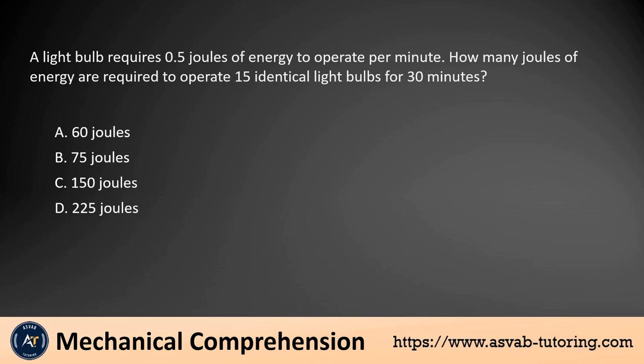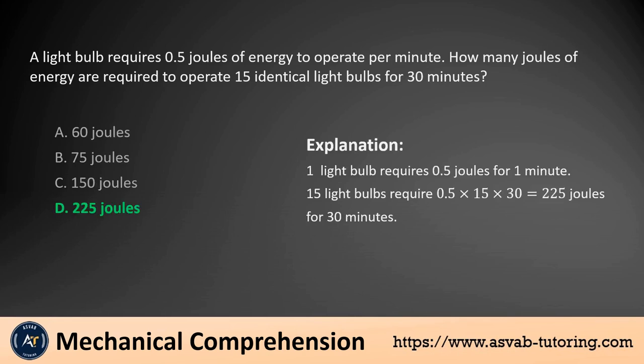A light bulb requires 0.5 joules of energy to operate per minute. How many joules of energy are required to operate 15 identical light bulbs for 30 minutes? A. 60 joules. B. 75 joules. C. 150 joules. D. 225 joules. The answer is D. One light bulb requires 0.5 joules for 1 minute. 15 light bulbs require 0.5 times 15 times 30, which equals 225 joules for 30 minutes.